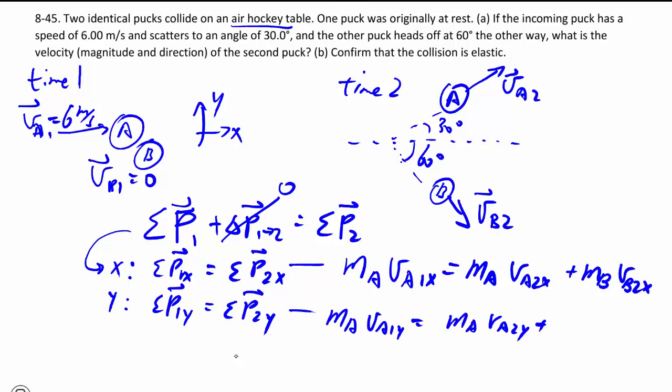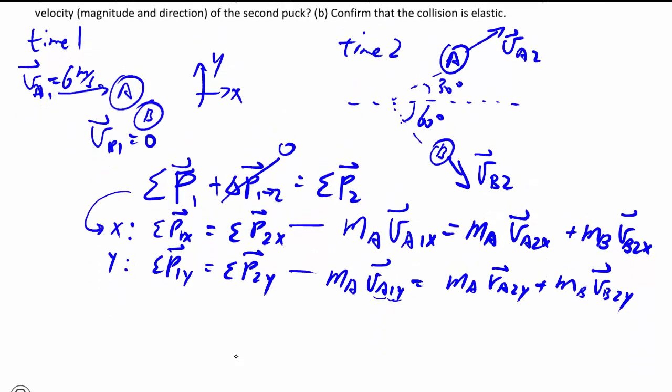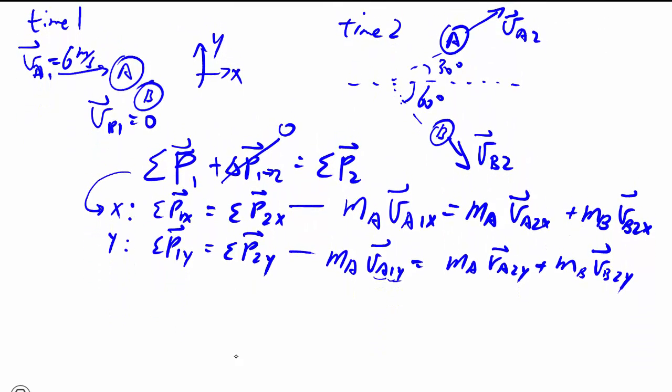You can write the same thing for the Y. These are all vectors because positive negative signs still matters. And you once again notice how important subscript is. In this case, we have one for the puck, one for the time, and one for the X or the Y as well.